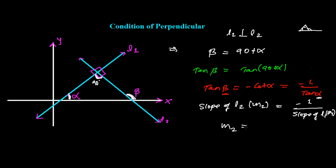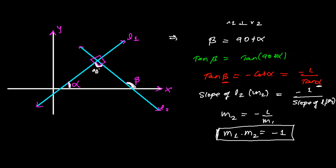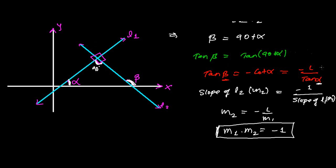So finally what we get: m2 is negative of 1 over m1. To write it properly, we can write m1 times m2 equals to minus 1. This is the condition for the perpendicular of two lines. When any two lines are perpendicular to each other, then the product of their slope must be minus 1. If this condition is achieved by any two straight lines, then we can say that both the straight lines are perpendicular to each other.